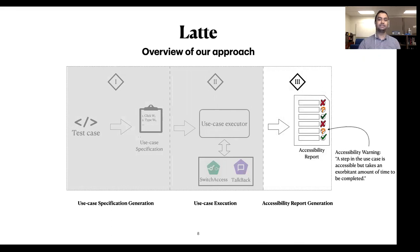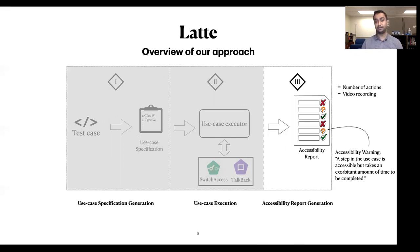Accessibility warnings are steps in a use case that are accessible, however it takes an exorbitant amount of time. Moreover, we report additional information, such as the number of actions it takes to complete a use case and a video recording of the use case execution, to make developers familiar with the struggle of users with disabilities.